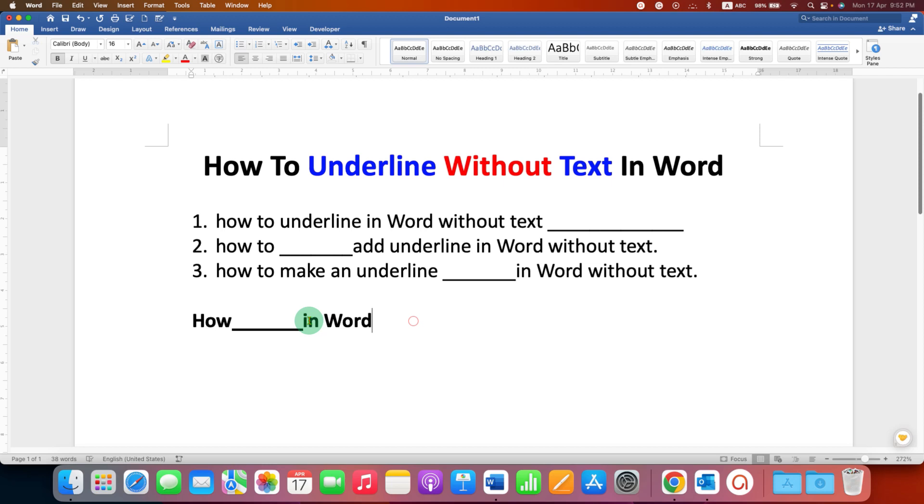But this method works only when you want underline inside the sentence. To get the underline after the sentence, hold the shift button on your keyboard and press underscore multiple times to get the underline without text.